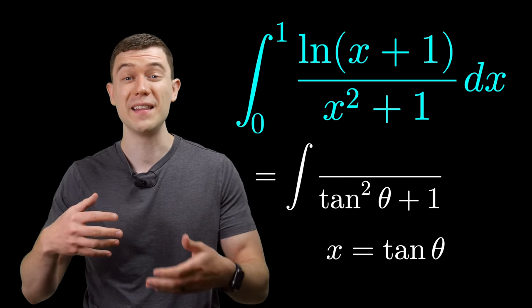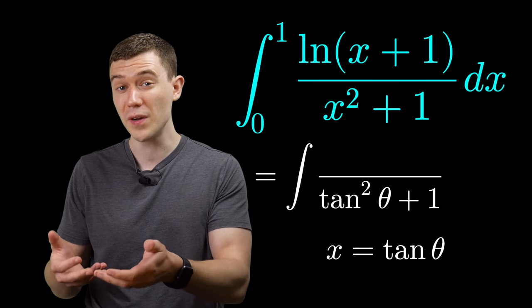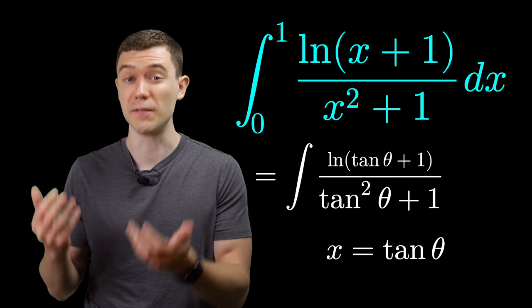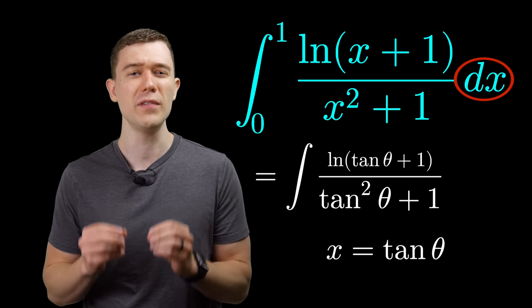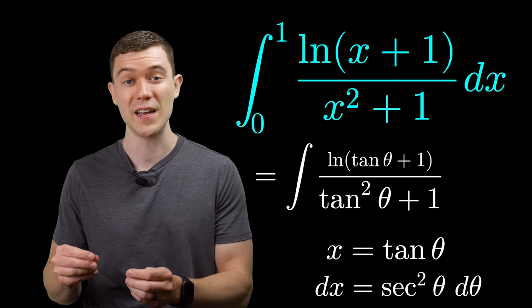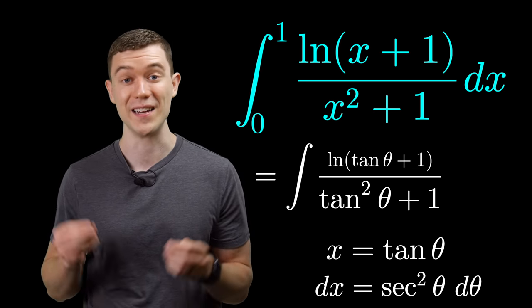We'll have to substitute tan theta in for x in the numerator and since we're changing the variable, we're going to need to change the differential. Let's take the derivative to get dx. That'll be the derivative of tangent theta, which is secant squared theta d theta.